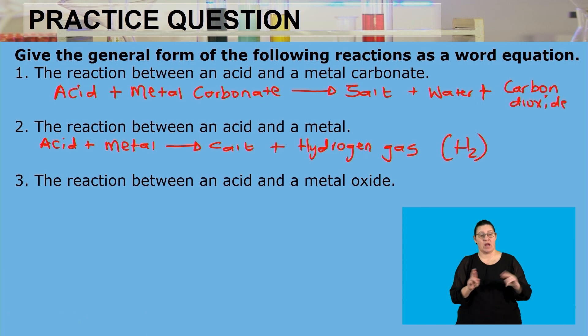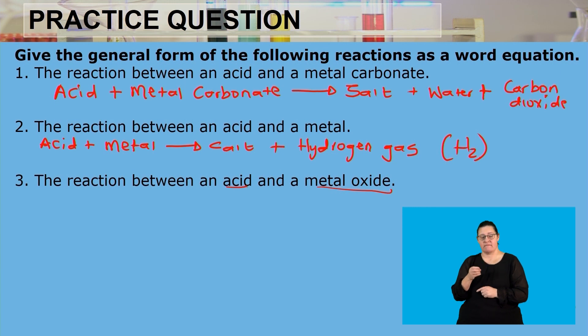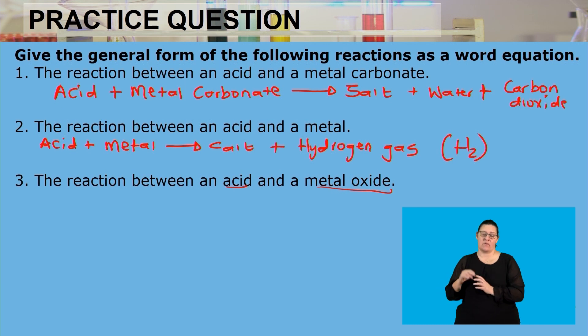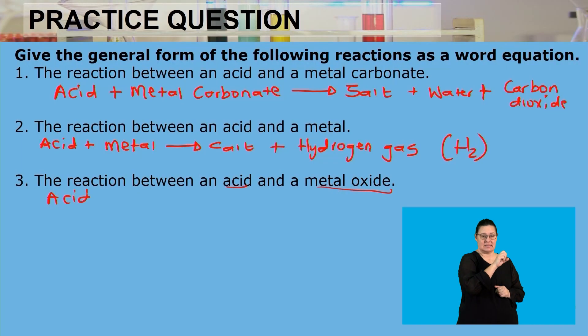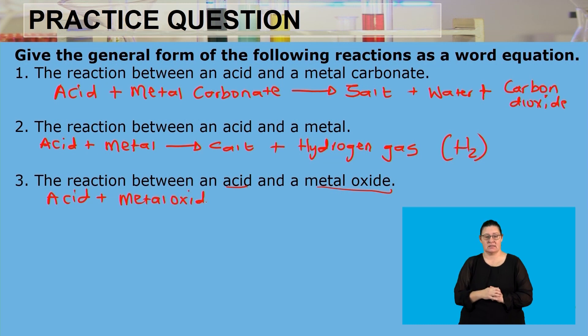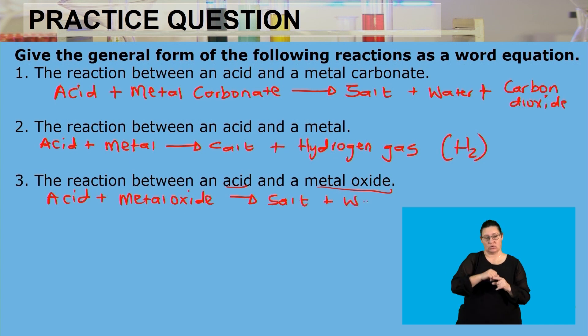Next: when there is a reaction between an acid and a metal oxide, the metal has oxygen within itself, so it can donate that oxygen to form water, because the acid always donates the hydrogen. That hydrogen plus the oxygen from the metal oxide combine to form water. So the general reaction is: acid + metal oxide → salt + water.